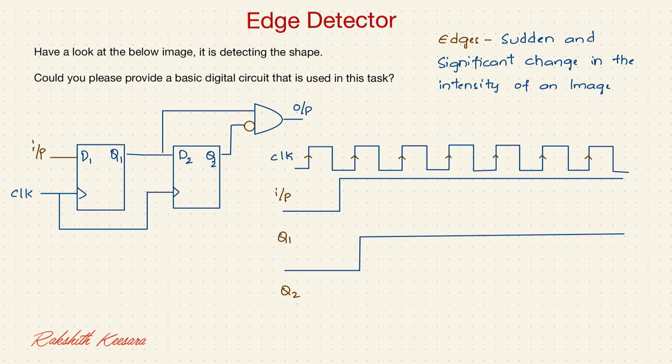So shift the Q1 to the clock cycle. At this edge the output is 0. At this edge the output will be 1. So shift it by 1 clock cycle.